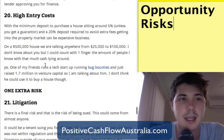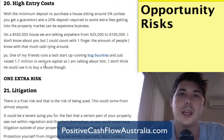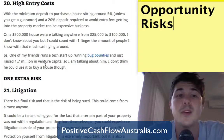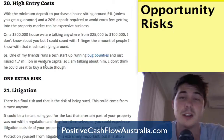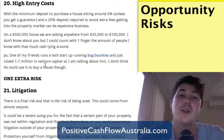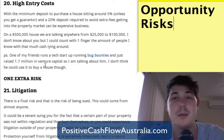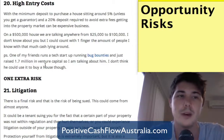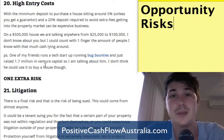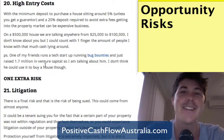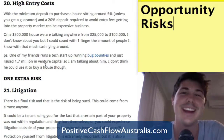Number twenty is the high entry costs of buying a property, which is definitely an opportunity risk. On a $500,000 house you're talking about a minimum of $25,000, or $100,000 plus closing costs if you want a 20% deposit. I'm in my 20s and a lot of us just don't have that sort of money lying around to throw into an investment. Very few people have that kind of cash readily available.